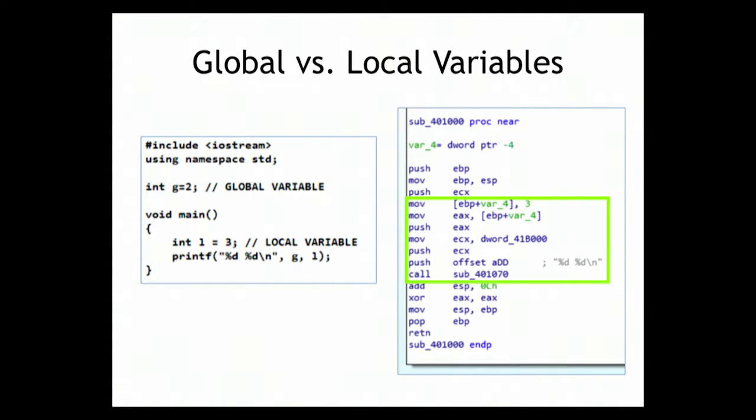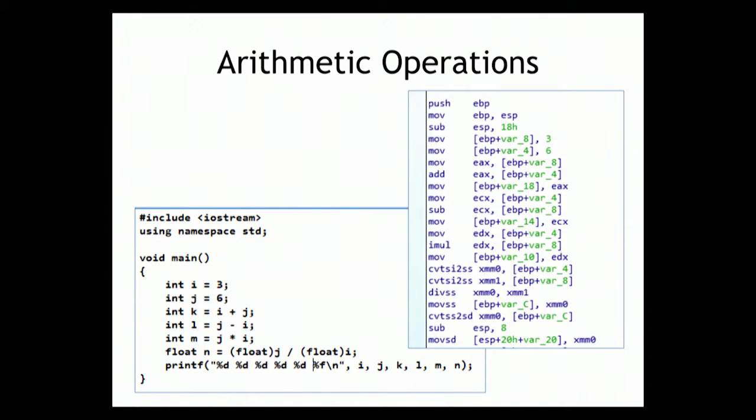Local variables are on the stack, so they will have an address like EBP plus some displacement from the base pointer. The other one is DWORD 41B1000, just an address somewhere else where it's stored. IDA Pro doesn't have symbols for most code, so it will just make up a name based on the address. That's a variable that goes in ECX, then you push it. This one on the stack, you put it in EAX, then you push it. Push, push, call.